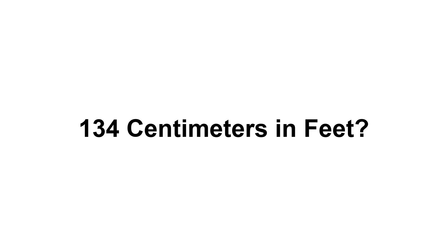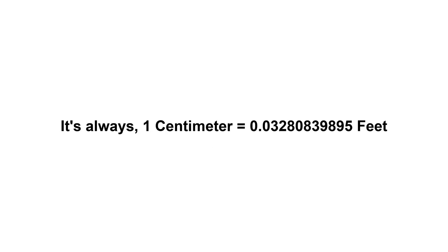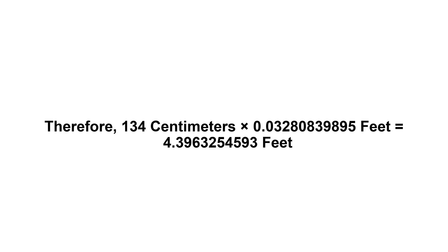134 centimeters in feet. First of all, we need to know the value of one centimeter in feet. One centimeter equals 0.03280839895 feet. Now we have to multiply 0.03280839895 by 134. Therefore, 134 centimeters times 0.03280839895 feet equals 4.3963254593 feet.